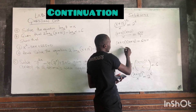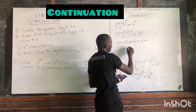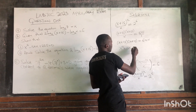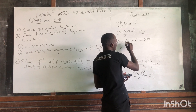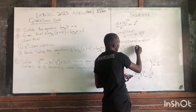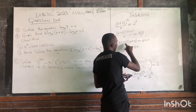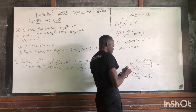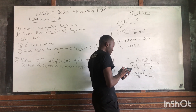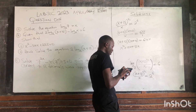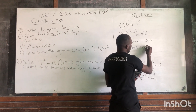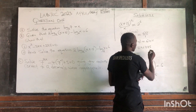x times 15, you get 15x. x times 15, here you get plus 15x. 15 times 15, so 15 times 15, this one will give us 225.